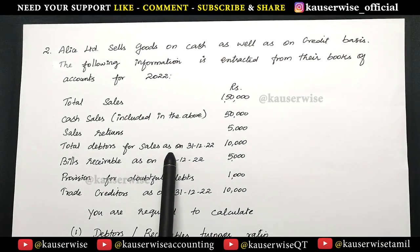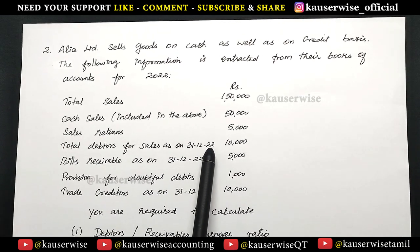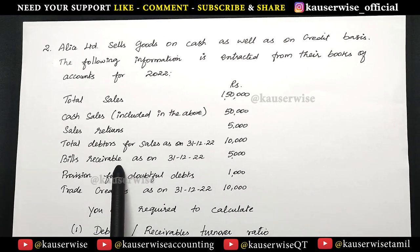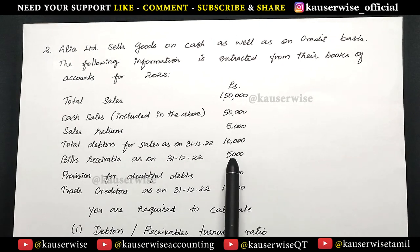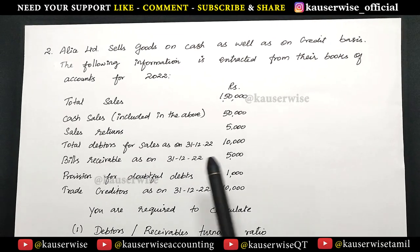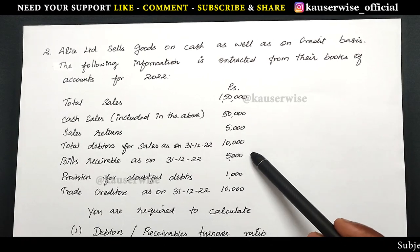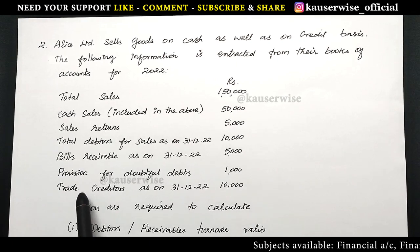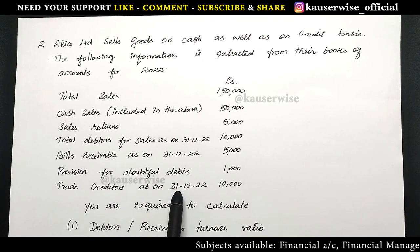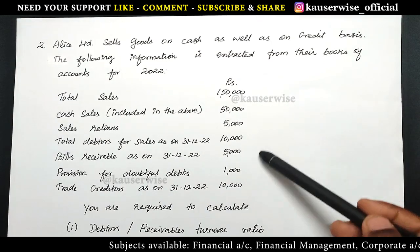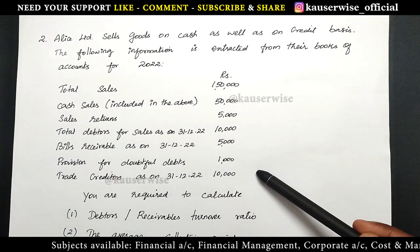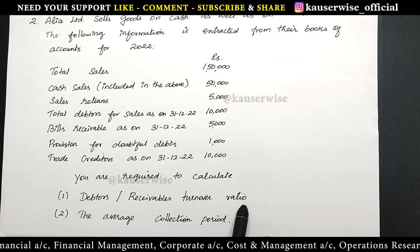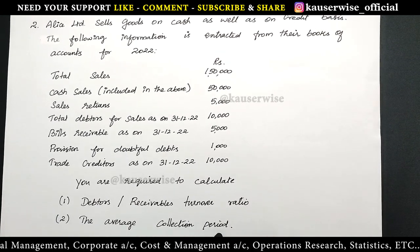Total debtors for sales as on 31st December 2022, that is closing debtors: 10,000. Bills receivable as on 31st December: 5,000 — this is also closing receivables, so we have closing debtors and closing bills receivables. And then provision for doubtful debts: 1,000. Trade creditors as on 31st December: 10,000. With this information they are asking you to calculate debtors or receivables turnover ratio and the average collection period.